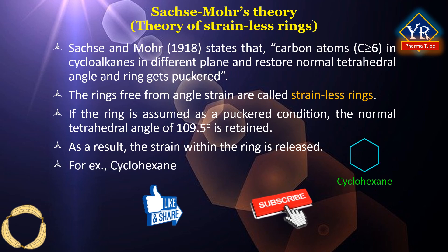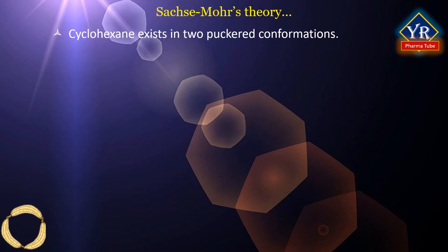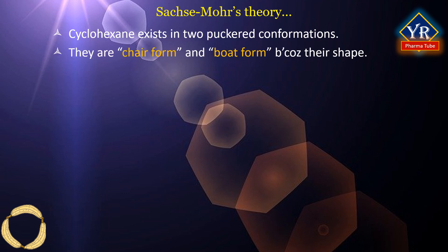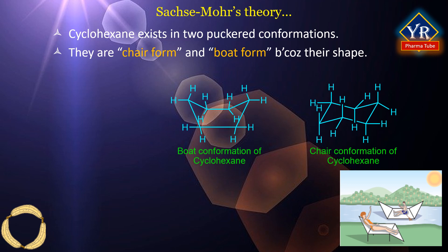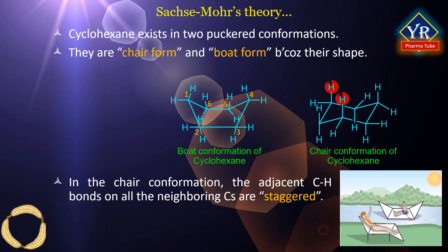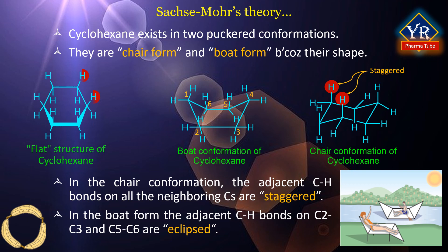For example, cyclohexane. Cyclohexane exists in two puckered conformations, namely the chair form and the boat form. They are named according to their shape. Both these forms are without any angle strain — hence they are strainless rings. The chair form of cyclohexane is more stable than the boat form. In the chair conformation, the adjacent carbon-hydrogen bonds on all the neighboring carbon atoms are staggered. In the boat form, the adjacent carbon-hydrogen bonds on C2-C3 and C5-C6 are eclipsed. Hence, the energy of the boat form becomes more than that of the chair form.